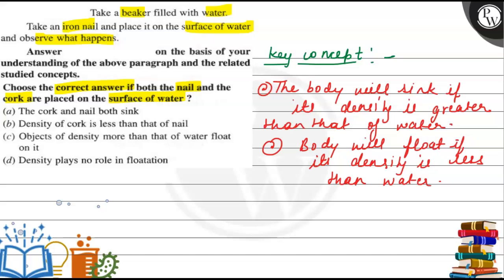Toh yahaan par iron nail aur cork liya gya hai toh. Since the density of iron is more and cork is less on comparison with water.